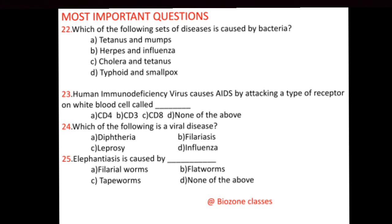Question number 25: Elephantiasis is caused by — filarial worm, flat worm, tape worm, or none of the above. The correct answer is filarial worm.